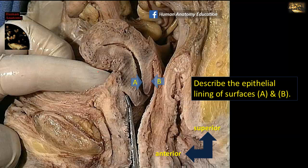Describe the epithelial lining of surfaces A and B. This is a sagittal section of a female pelvis showing the cervix protruding into the vagina. At surface A, the lining epithelium is simple columnar epithelium, similar to that of the rest of the uterus — the endometrium. From the external os outwards, the epithelium covering the cervix is stratified squamous non-keratinized epithelium, the same as lines the vagina. The thickness of the cervix is composed mainly of connective tissue fibers and fibroblasts, with only few muscle fibers.